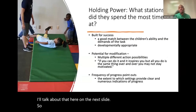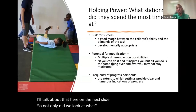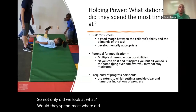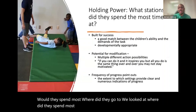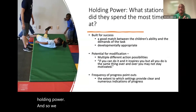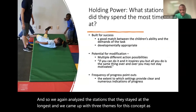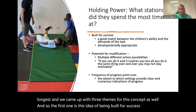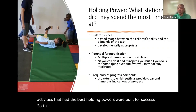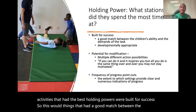Not only did we look at where children went, but where they spent most of their time — the idea of holding power. We analyzed the stations they stayed at longest and came up with three themes. The first is being built for success: activities with good match between the children's current ability and the demands of the task — what we generally call developmentally appropriate. The key question is: how can we develop an activity that all children can be successful in, no matter their ability levels?